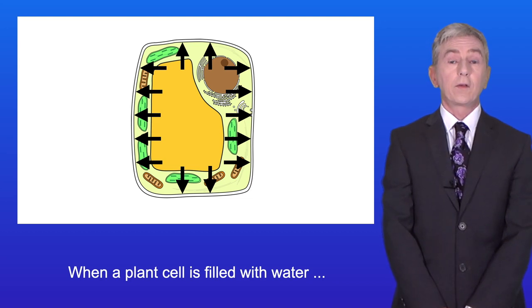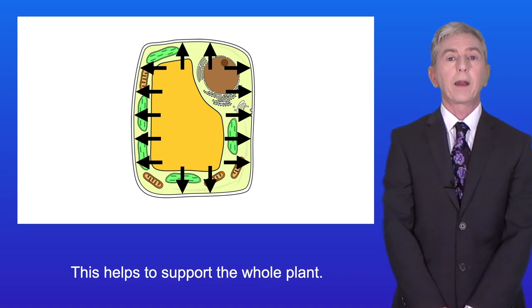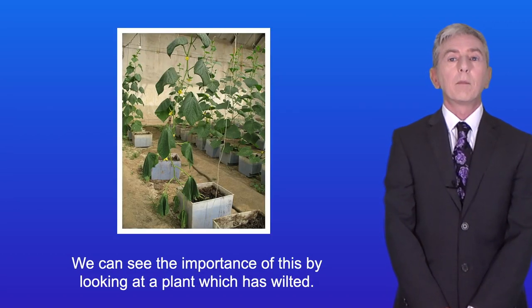Now when a plant cell is filled with water the outward hydrostatic pressure makes the cell wall rigid and this helps to support the whole plant. Now we can see the importance of this by looking at a plant which is wilted.